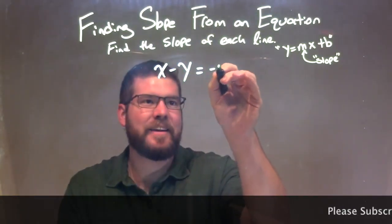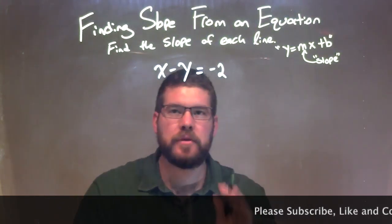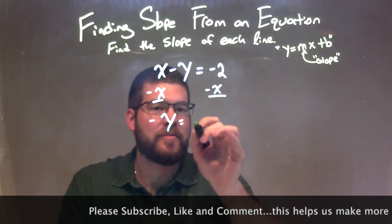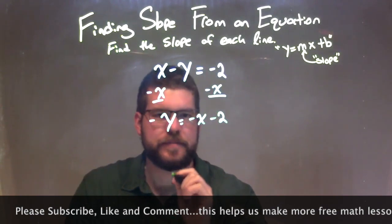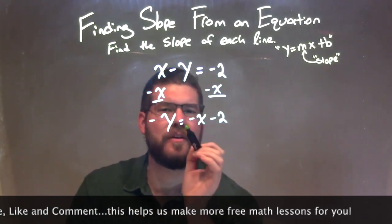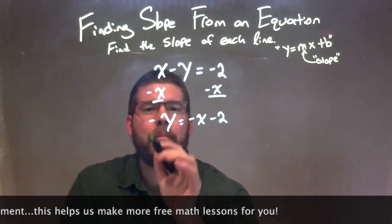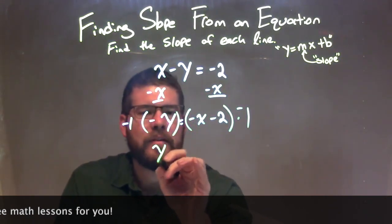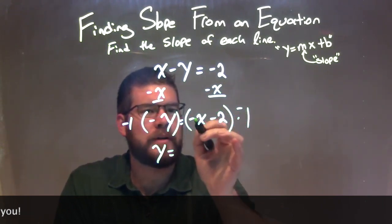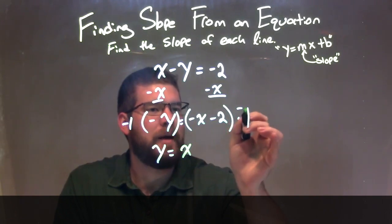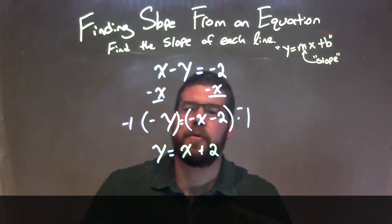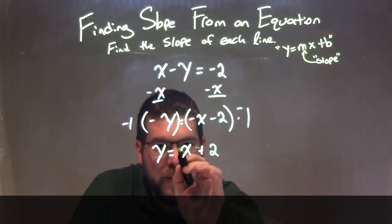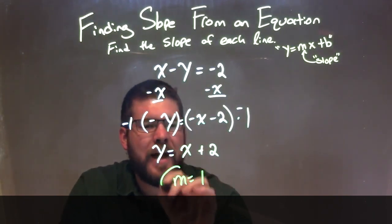x minus y equals negative 2. I need to isolate y, so I subtract x from both sides. That leaves negative y on the left and negative x minus 2 on the right — not like terms, cannot combine. Now I need to get rid of that negative since y is not officially isolated, so I multiply both sides by negative 1. Distributing: negative 1 times negative x is positive x, and negative 1 times negative 2 is plus 2. So now we have slope-intercept form: y equals x plus 2. Don't miss it — m is what's in front of x, which is just a 1. There's an imaginary 1 in front of x, so m equals 1 as our final answer.